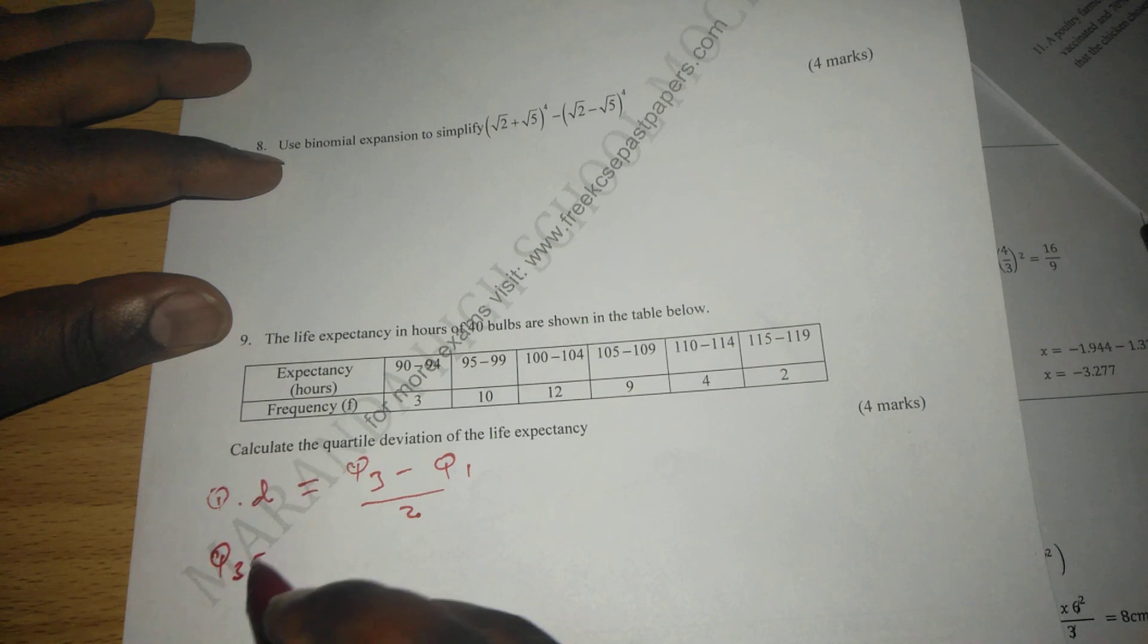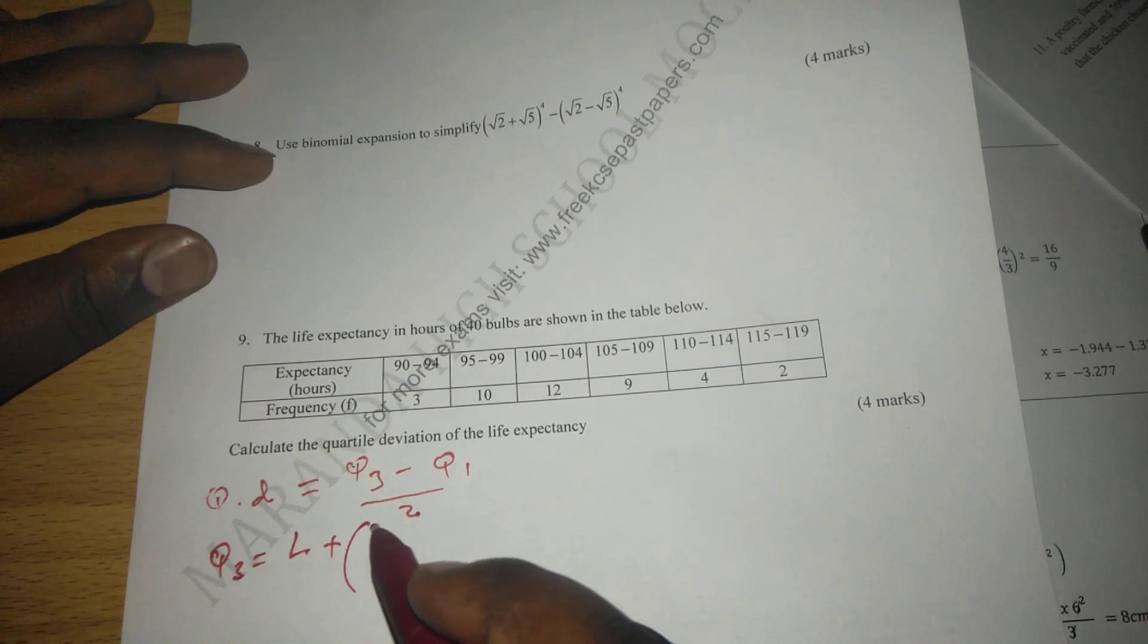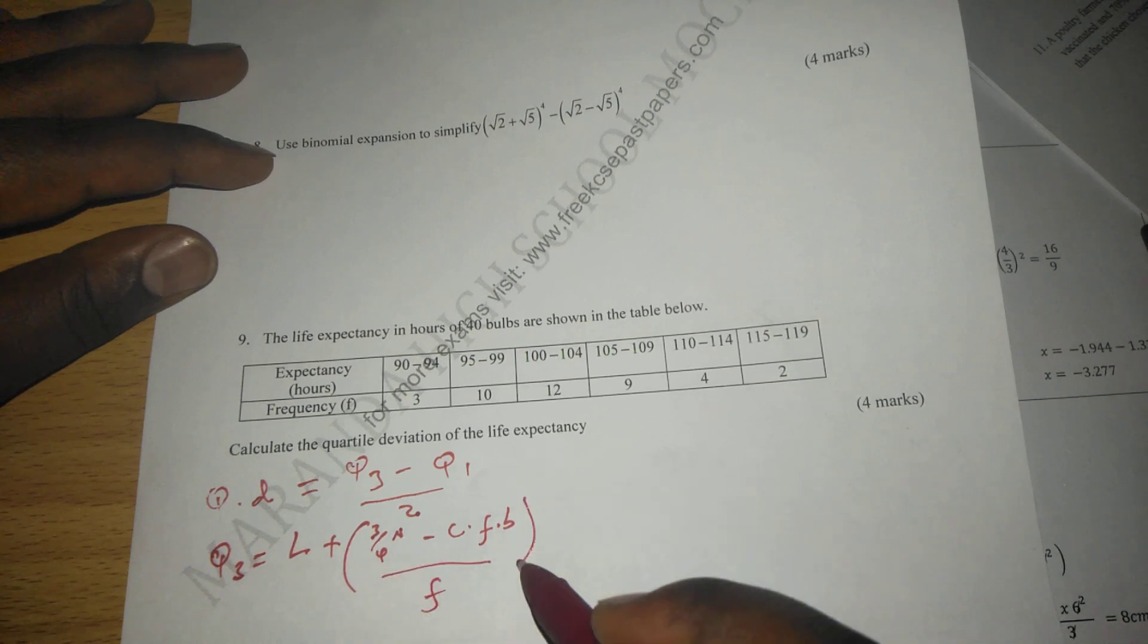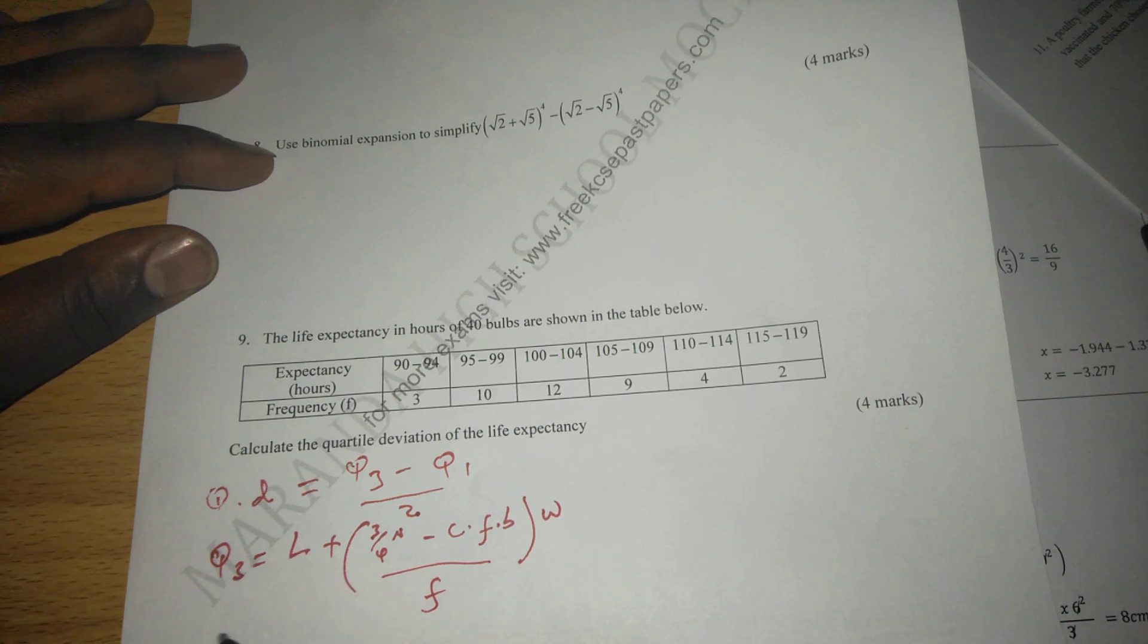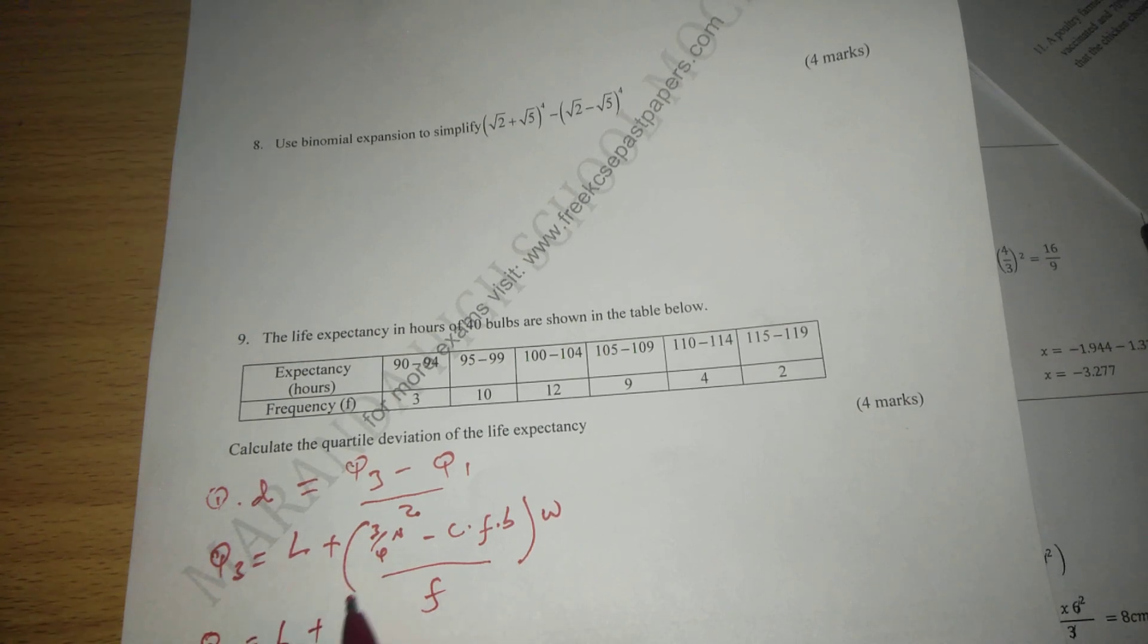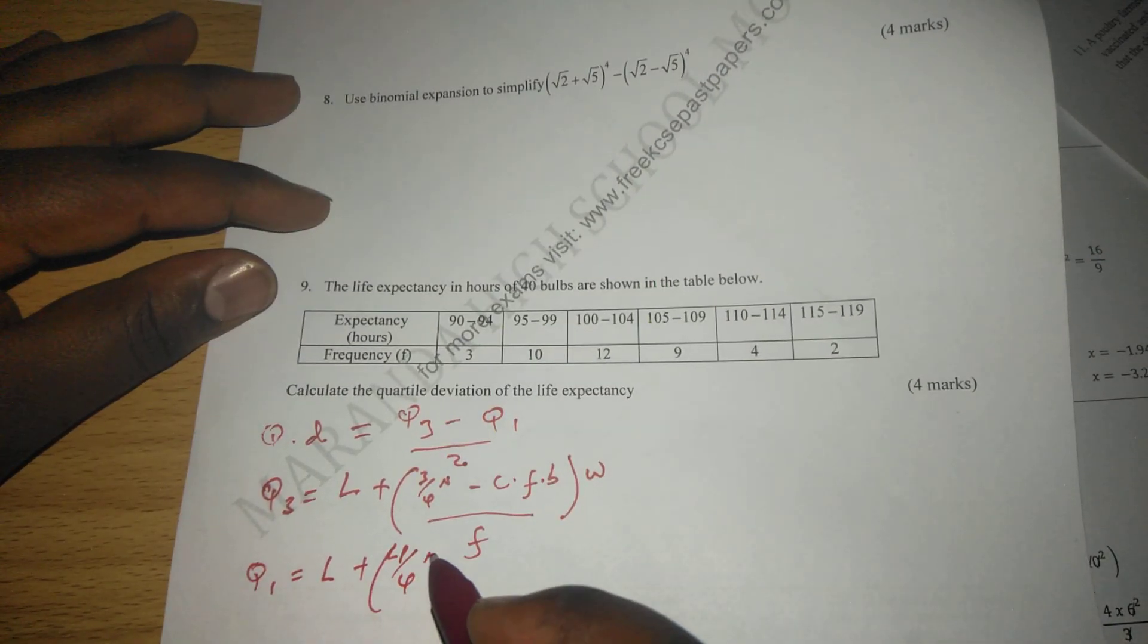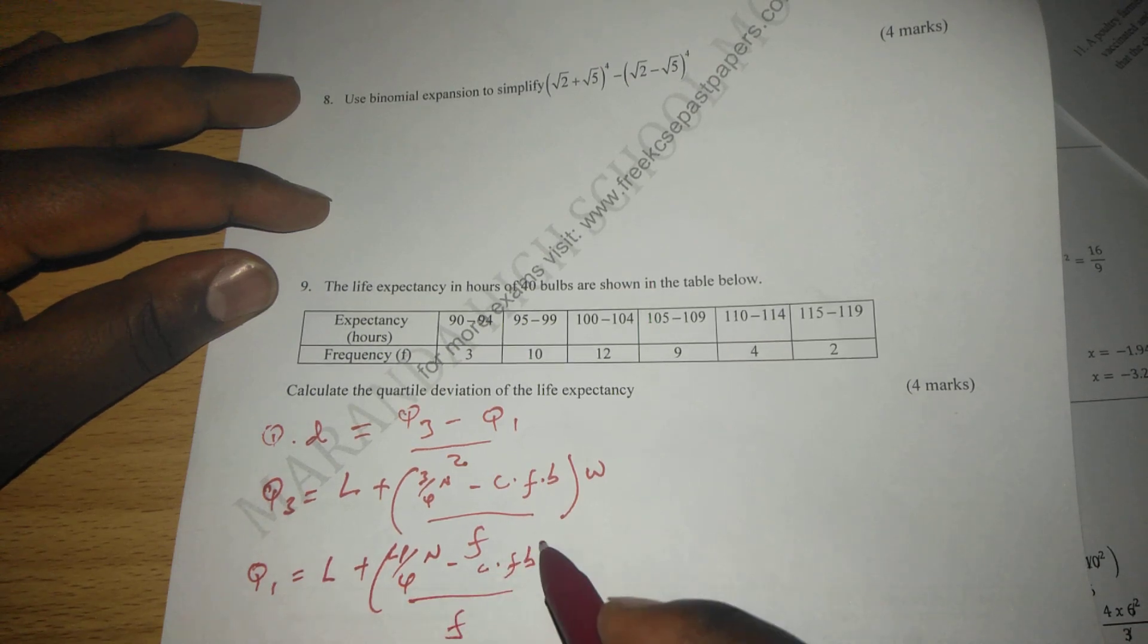Q3 is given by the lower class boundary of where three quarters of n lie minus the cumulative frequency before that class divided by frequency of the Q3 class, then we multiply with the class length. And on the other hand to get Q1, the lower class boundary of a quarter of the data minus the cumulative frequency before that class divided by frequency of that class multiplied by class width or class size.